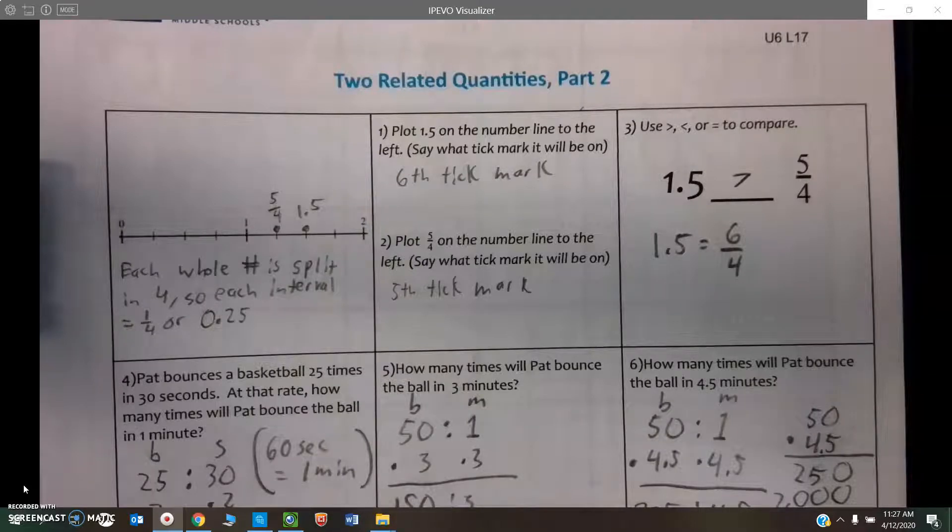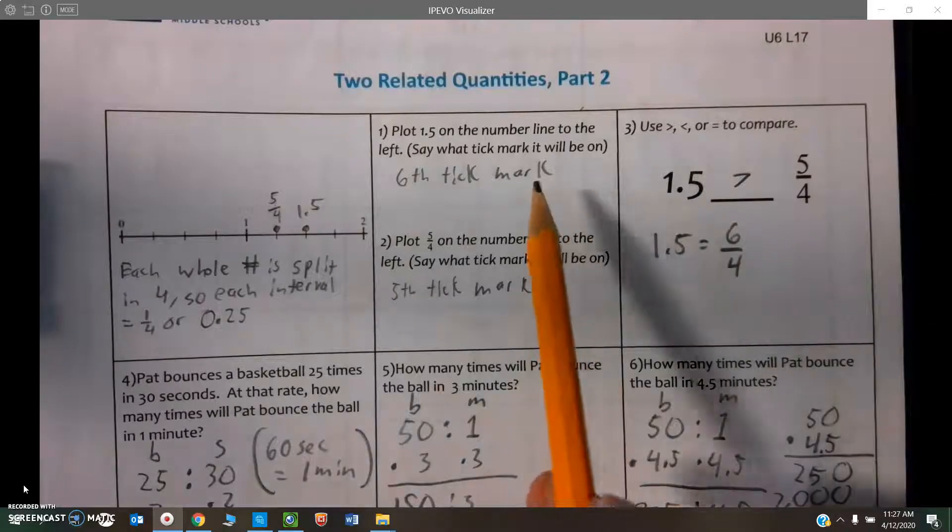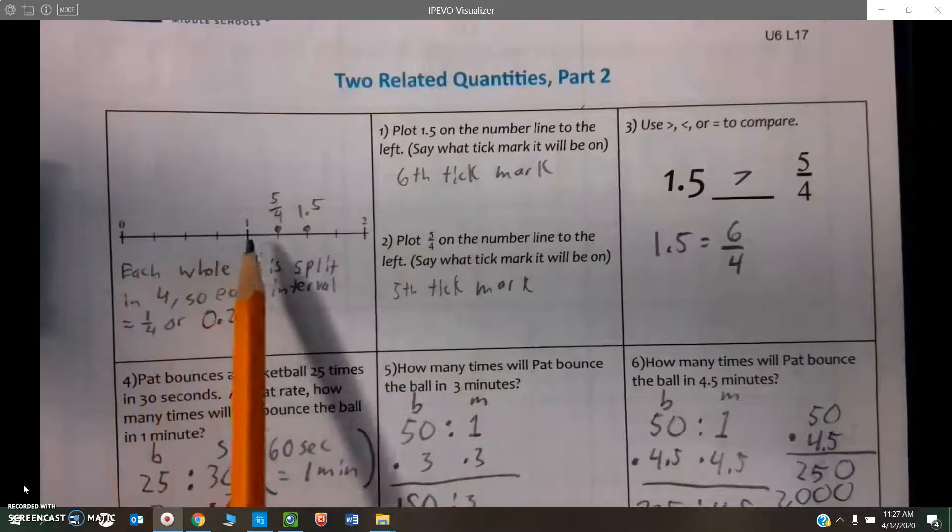Number one says to plot 1.5 on the number line. So that would be on the sixth tick mark: one, two, three, four, five, six.